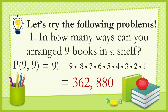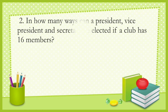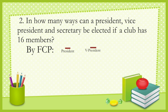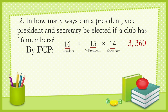Nine factorial equals 362,880. Number two: in how many ways can a president, vice president, and secretary be elected if a club has 16 members? By the fundamental counting principle, we need three positions. For president there are 16 choices; for vice president, one member is removed once president is elected, leaving 15 choices; for secretary, we deduct again, leaving 14 choices. Multiplying gives 3,360 possible outcomes.